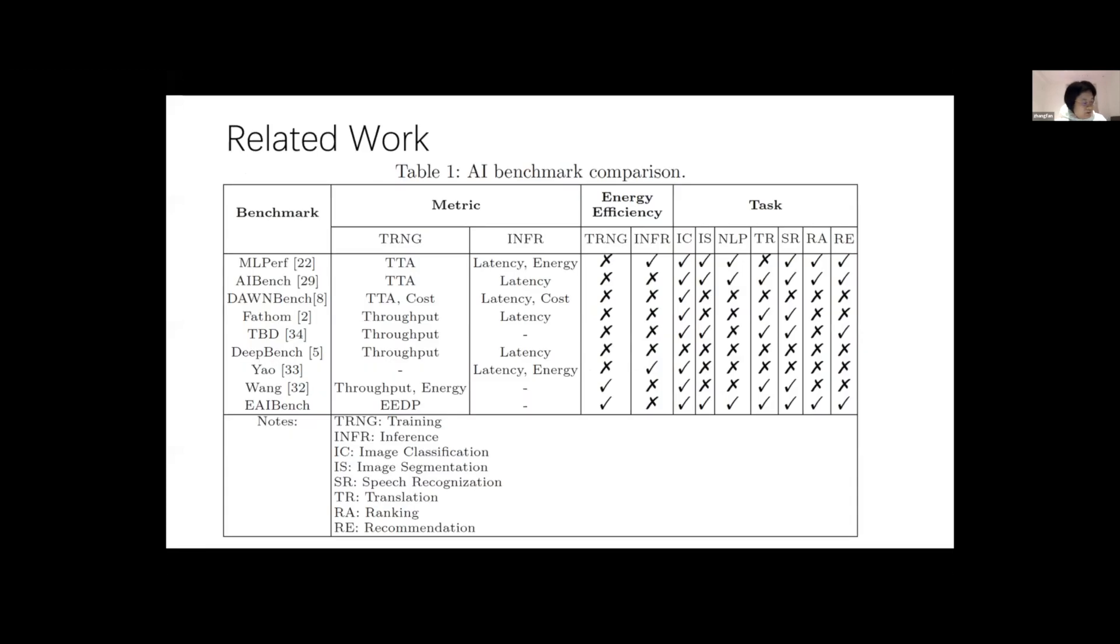Related to the work, existing AI benchmarks typically focus on performance, such as MLPerf, AIBench, DAWNBench, Fathom, TPD, and DeepBench. There is some work focused on AI energy efficiency, but this work mainly analyzes inference procedure and lacks training analysis, such as Yao's and Wang's work. Also, our work proposes EAI Benchmark, which is aimed for AI training benchmark for energy efficiency, and we use a new metric named EEDP.